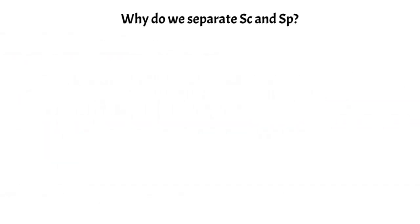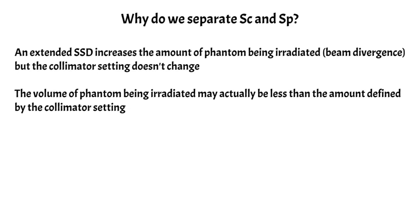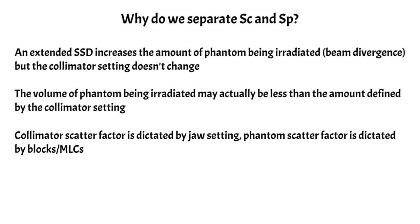Why do we need to separate the collimator scatter factor from the phantom scatter factor? There are a few situations that make this clear. One is if we have an extended SSD — this increases the amount of phantom being irradiated due to beam divergence, but the collimator setting doesn't change, so we need to account for that differential volume by using a different field size for the phantom scatter factor. On the flip side, the volume of phantom being irradiated might be less than what the collimator defines — for example, a block or MLC shaping the field so the field size at the phantom surface is less than the collimator setting. Because of this, we use two different field sizes: collimator scatter is dictated by the jaw setting, while phantom scatter is dictated by any blocking or MLC field shaping present in the beam path.